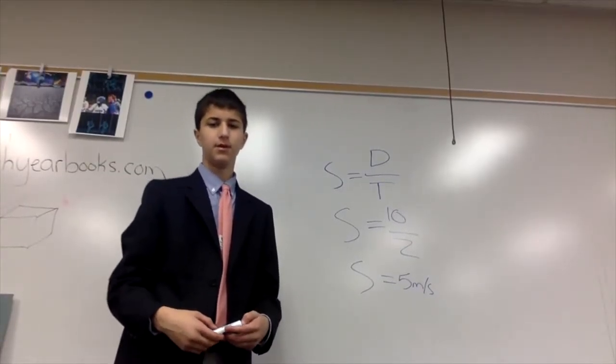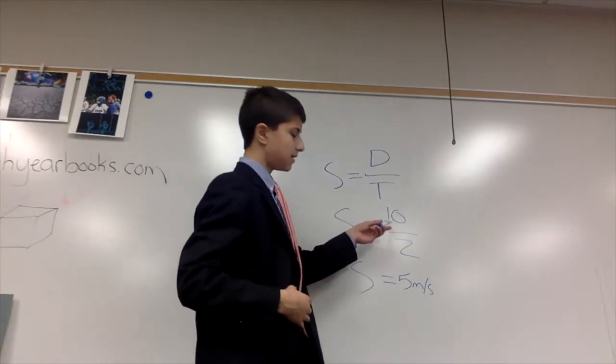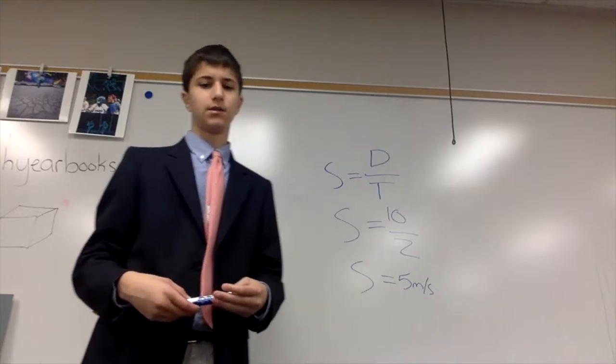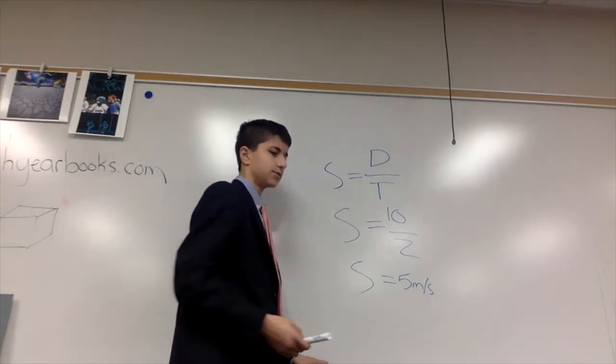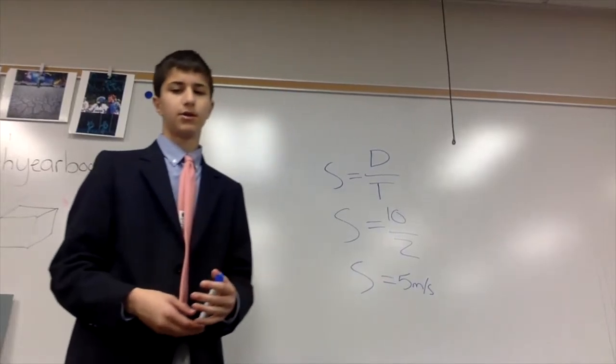The formula for speed is distance over time. So if the ball travels 10 meters, and it took 2 seconds for the ball to travel those 10 meters, the speed is 5 meters per second. 10 divided by 2, and you get the answer of 5.